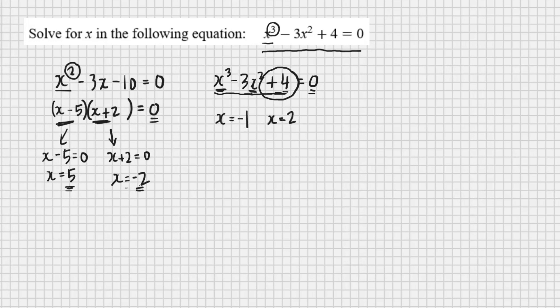I have to find the third solution. Because all the coefficients in the equation are integers, if two of the answers are integers then the third one is an integer as well. That suggests one of the two roots I found is repeated. So the solutions are either negative 1, negative 1, and 2, or negative 1, 2, and 2.